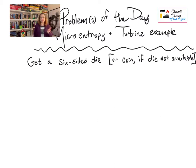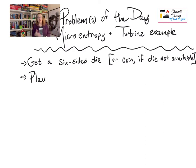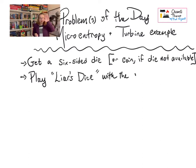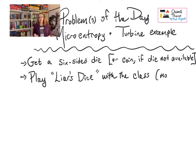For this example, I'd like you to get a six-sided die. If you don't have a huge collection of games like I do, perhaps you can borrow one from somebody, use a simulated one, or you can just flip a coin — but the example works a little less well. We're going to play a game called Liar's Dice. If we were all in the classroom, everyone would get a couple of dice to use during this game.